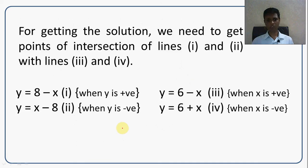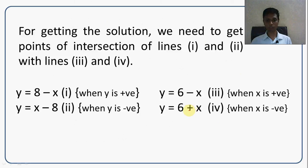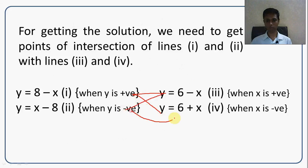Now I need to find the solution. The first equation was broken into two equations (1 and 2), and the second into two equations (3 and 4). I need to find points of intersection between these pairs: 1 and 3, 1 and 4, 2 and 3, 2 and 4. Solving each pair and validating the conditions will give me the solutions.